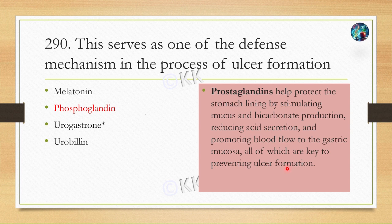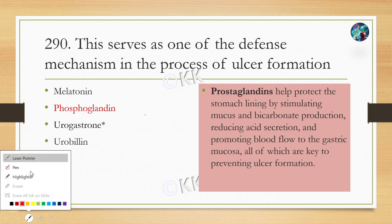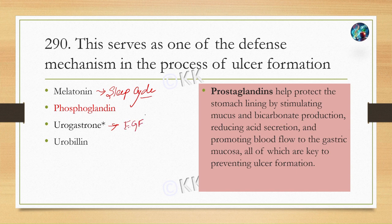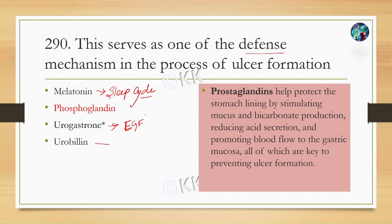Melatonin is a hormone that regulates sleep cycles and also has protective antioxidant effects on the gastrointestinal lining. Urogastrone, also known as epidermal growth factor, inhibits gastric acid secretion and promotes healing of the stomach lining — so if the question had asked what protects the stomach lining, the answer would be urogastrone. Urobilin is a pigment formed by breakdown of heme, primarily involved in giving urine its yellow color.